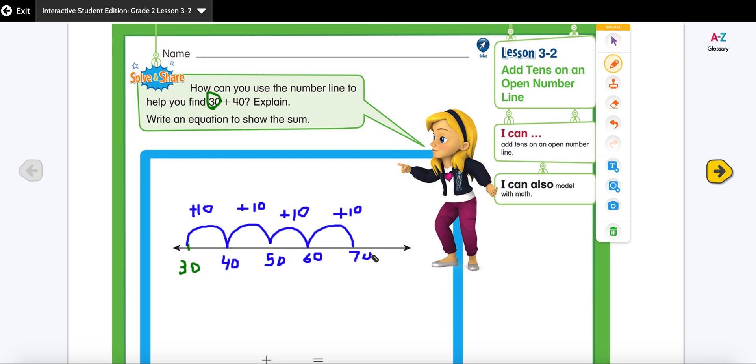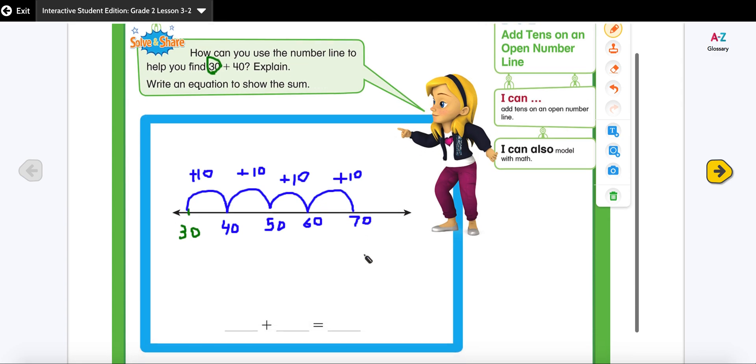So now I landed up to 70. So this is my number line. Now I'm going to use the equation. So let's start write our equation.